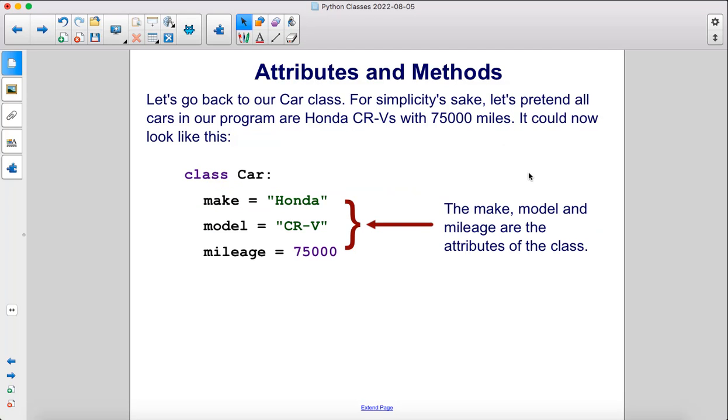Let's go back to our car class. For simplicity's sake, let's pretend all cars in our program are Honda CRVs with 75,000 miles. It could look like this. The make, model, and mileage are the attributes of the class.